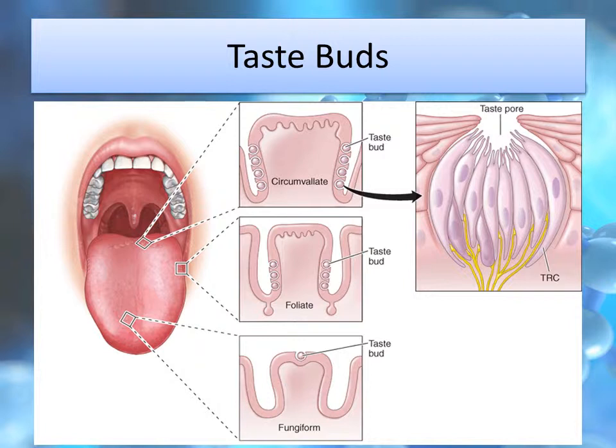The concept of a tongue map defining distinct zones for sweet, bitter, salty, and sour has largely been discredited. All of these sensations can be recognized by any taste receptor cells.